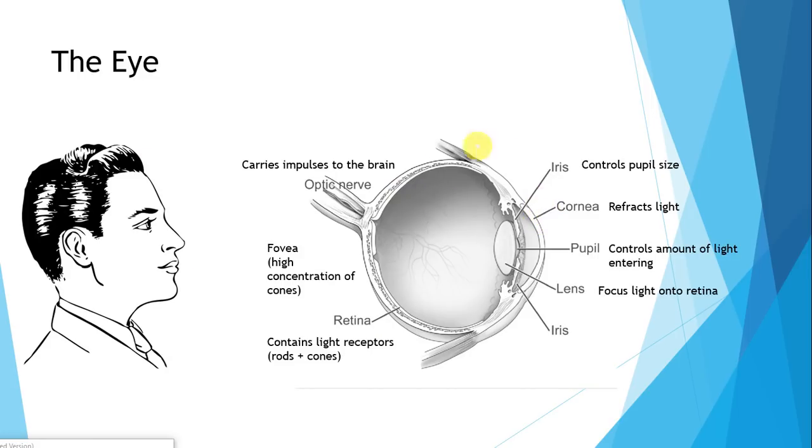Here is a quick diagram of the eye. You are required to label it and demonstrate knowledge of what each structure does. The back of the eye is the retina, which contains light receptors. There's two types: rods and cones. Rods are responsible for vision under low light conditions, and cones are responsible for color vision.